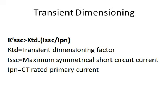After calculating K_SSC_dash, we need to check whether this effective symmetrical short-circuit factor is greater than or equal to KTD multiplied by I_SSC divided by I_PN. Here KTD is the transient dimensioning factor as defined in IEC 60044. This value is provided by the CT manufacturer and will be reflected in the technical particulars or CT catalogs. I_SSC is the maximum symmetrical short-circuit current and I_PN is the CT rated primary current. If this criteria is met, you can consider your CT selection is OK.